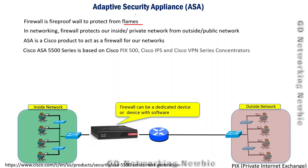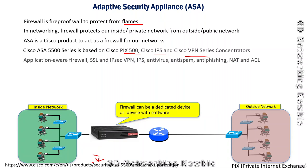Specifically we are talking about the Cisco ASA 5500 series. This series is based on the older Cisco PIX 500 series firewall, and it is also based on Cisco IPS — Intrusion Prevention System — and also the Cisco VPN concentrator series, where VPN stands for Virtual Private Networks. You can find further details via the link I'll put in the description. Based on these different technologies, the ASA firewall can actually act as various security appliances.